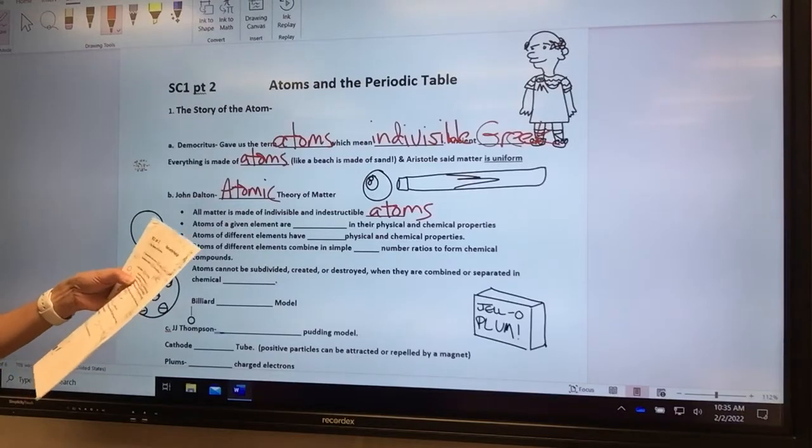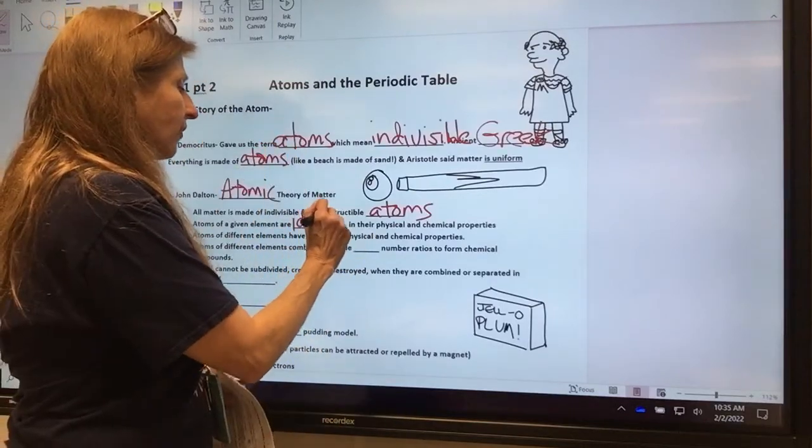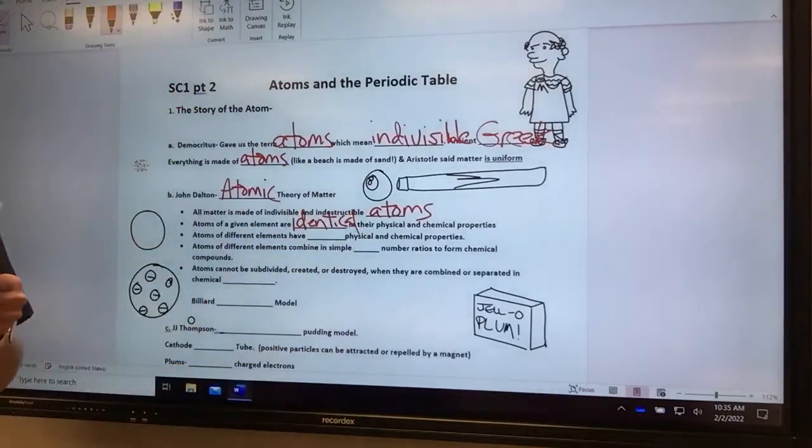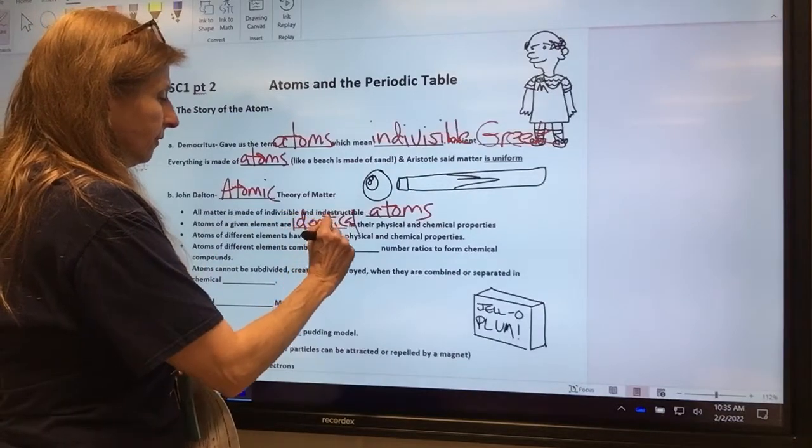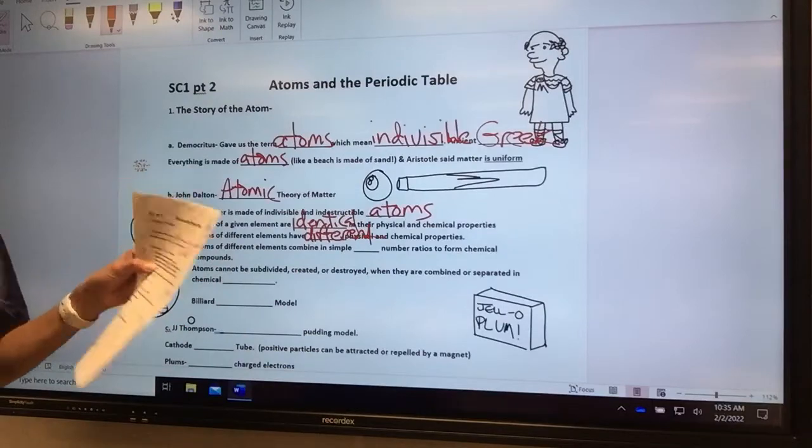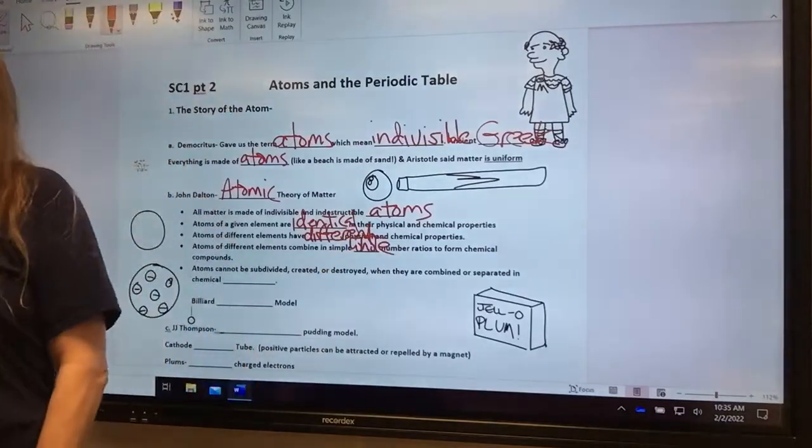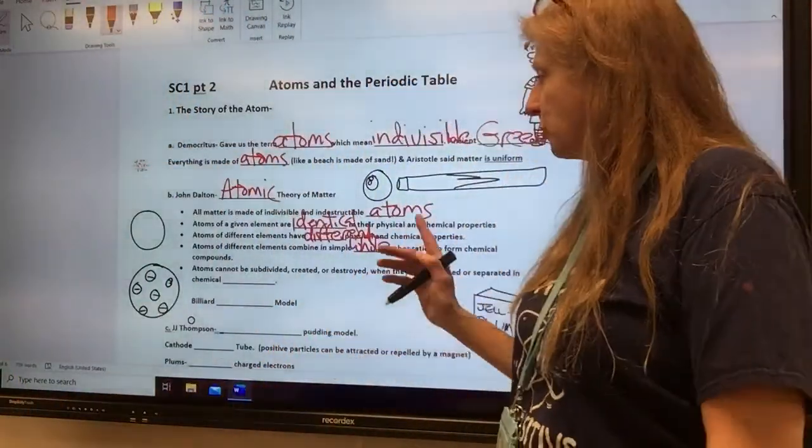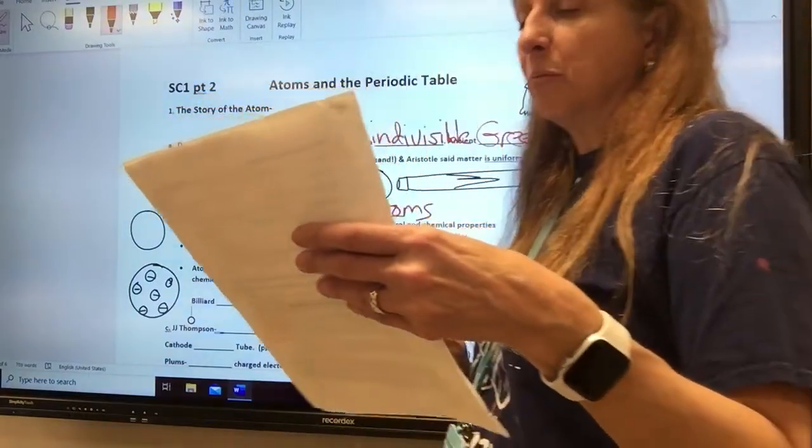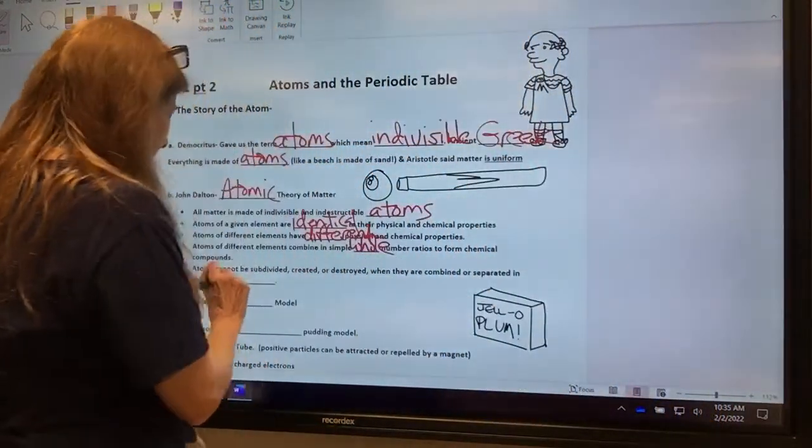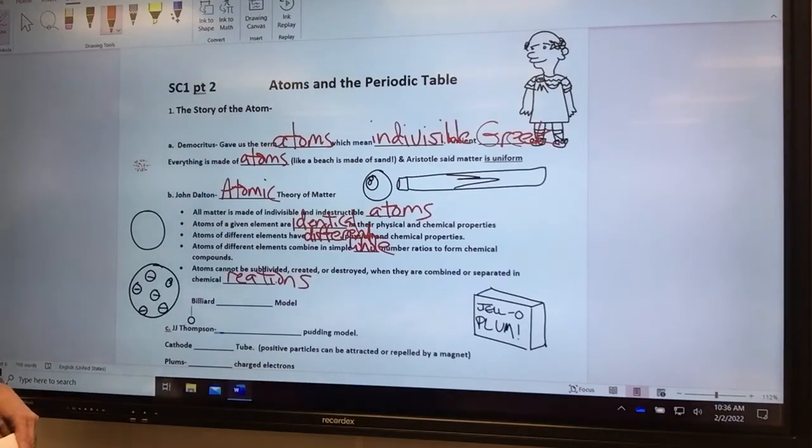The other thing he said: the atoms of a given element are identical. So every gold atom in the world is exactly like every other gold atom in their physical and chemical properties. Atoms of different elements have different chemical and physical properties. Atoms of different elements combine in simple whole number ratios, which means water is H2O, not H2.5O. It's whole number ratios.